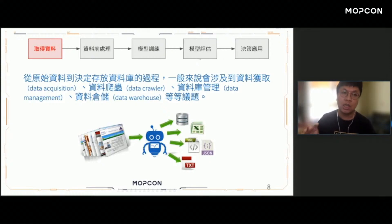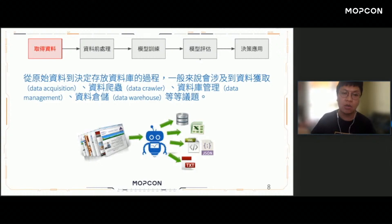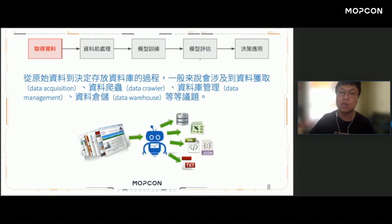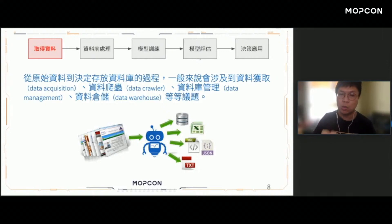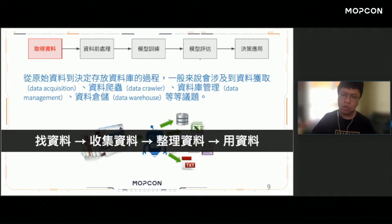整個資料科學的過程當中，可以分成幾個步驟：從取得資料、資料處理、訓練到應用的整個過程。不管你做的是統計學、機器學習、資料探勘或大數據應用，它的第一個步驟都是所謂的取得資料。在取得資料的環節當中，我們涉及的是從原始資料到決定存放資料庫的這個過程，會涉及到資料存取、資料爬蟲、資料庫、資料倉儲等議題。我們的目的是把資料從網路當中收集回來。